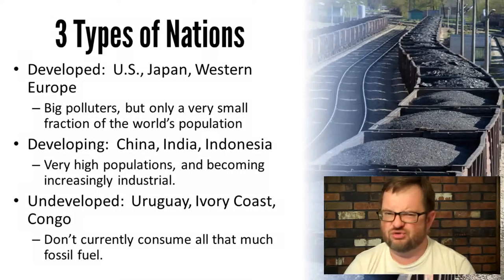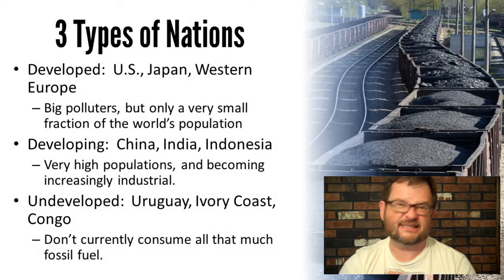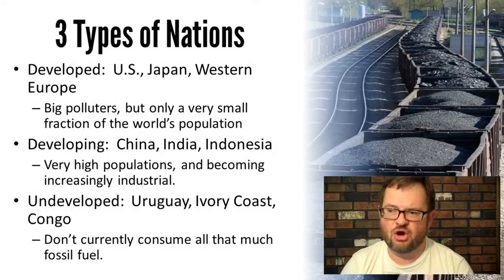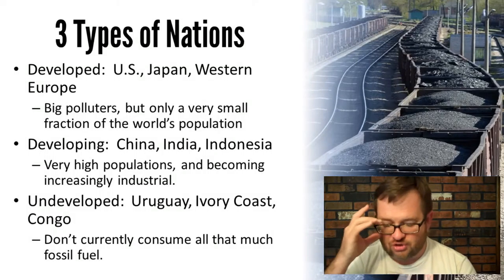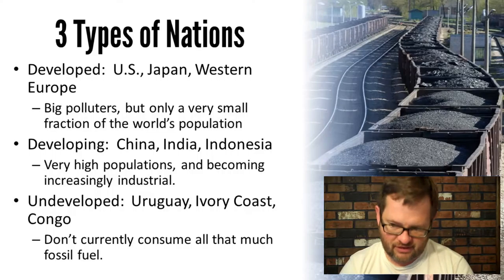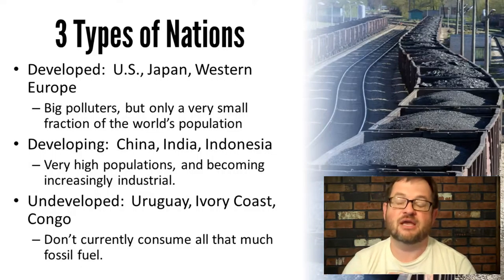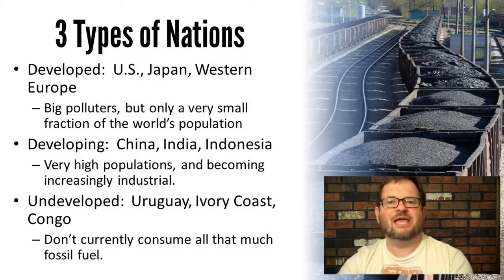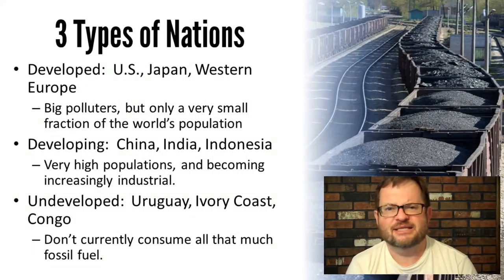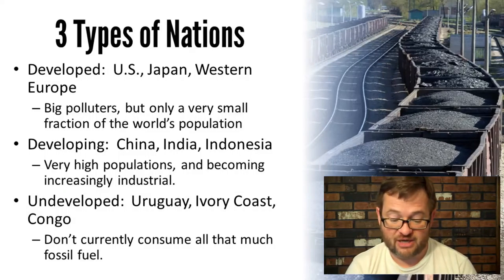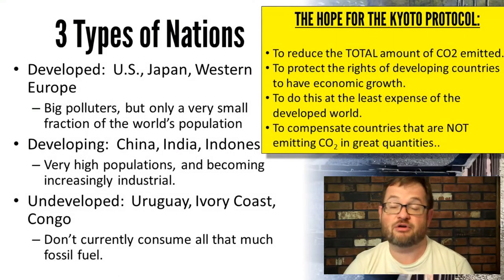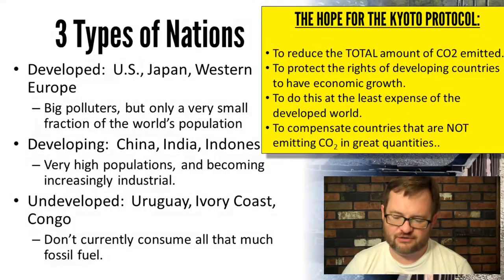There was also a list of so-called developing countries — economies changing rapidly in the 1990s, like China, Indonesia, and India — places with very high populations that were becoming increasingly industrial, with rapidly rising electricity consumption and car ownership. And finally, there was a list of undeveloped countries that were not really using much fossil fuel because they didn't have much of an economy going on.